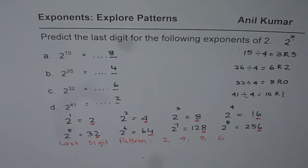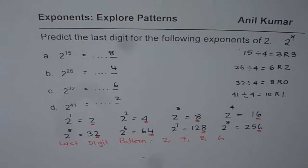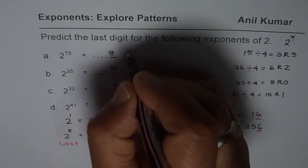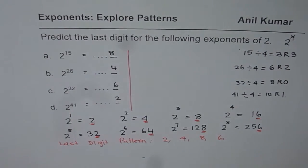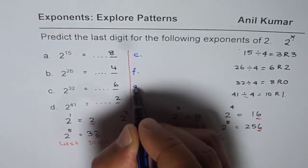So that is how we can actually very easily find the digit in the last place for any exponent of 2. I hope that is absolutely clear. Now for you to practice, you can try these E, F, and G.